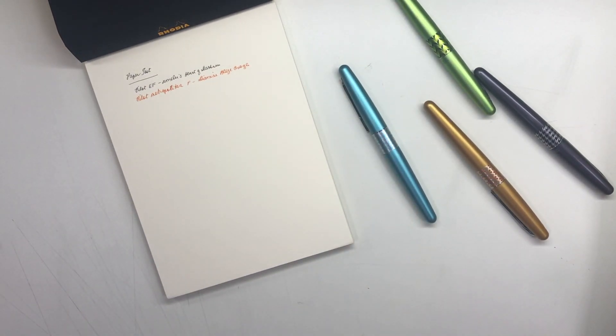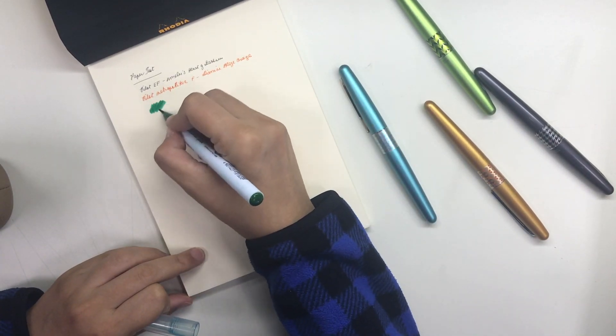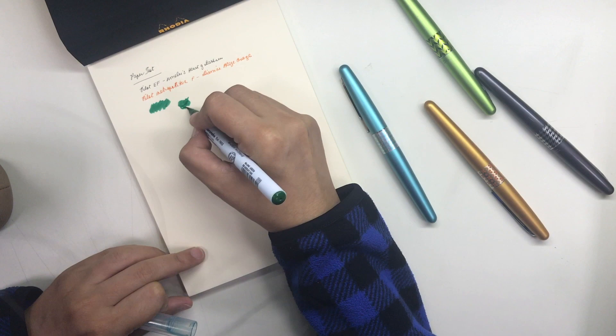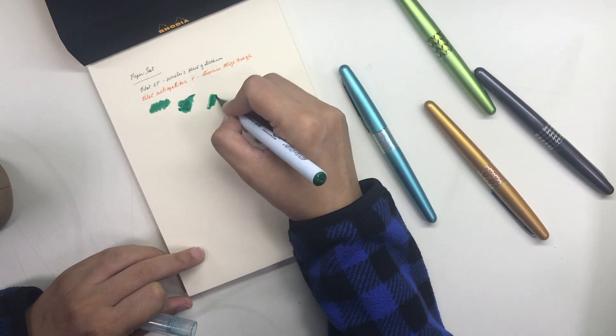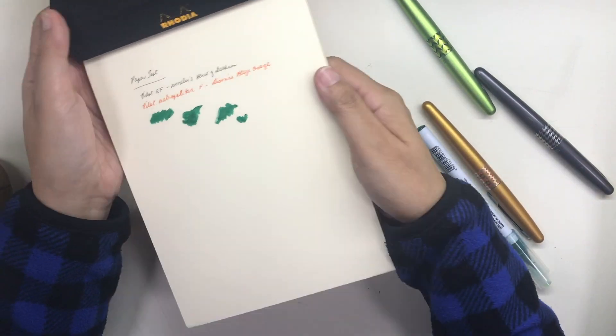The orange Metropolitan still has the fine nib that it came with and then I also used a Zig Clean Color Real Brush Pen as well because I use these brush pens on my Hyperdex every day.